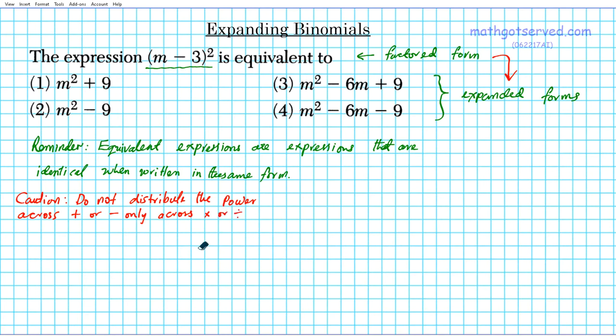So this is a property of exponents that most people get confused. So for example, if you have the sum of two terms, a plus b and you have it squared, do not distribute this power across both. So a plus b squared is not equal to a squared plus b squared. This is wrong.